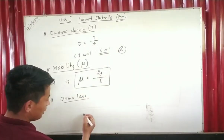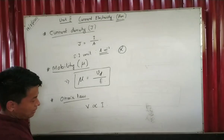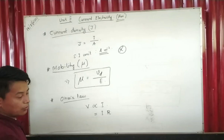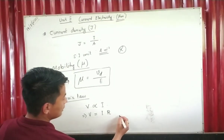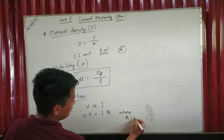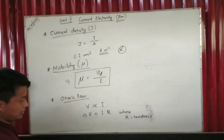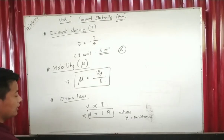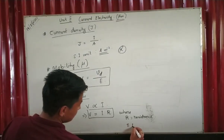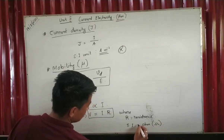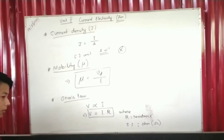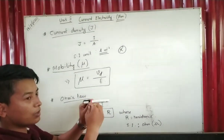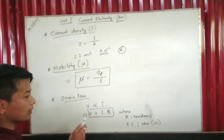If you apply a potential difference, the current flows proportionally. The constant of proportionality is called resistance. This gives us V equals IR — Ohm's law. The unit of resistance is the Ohm.